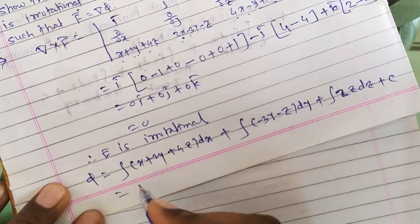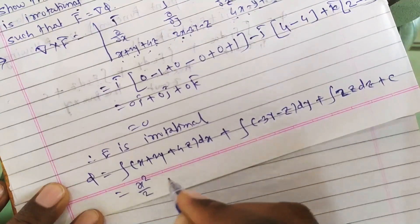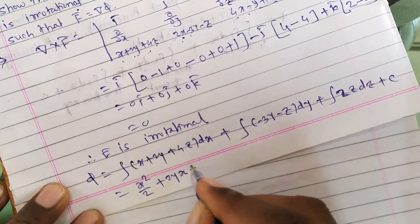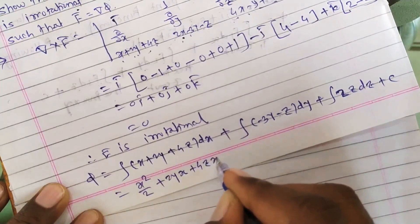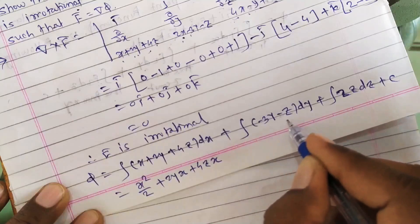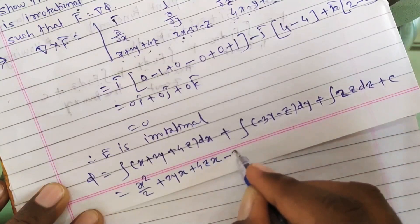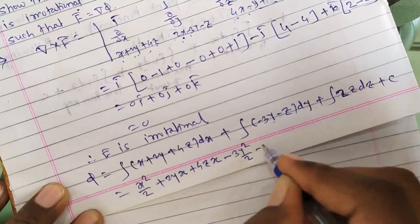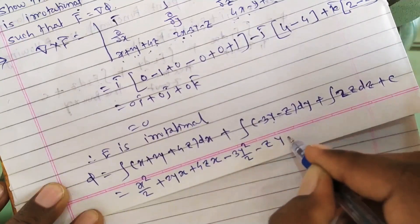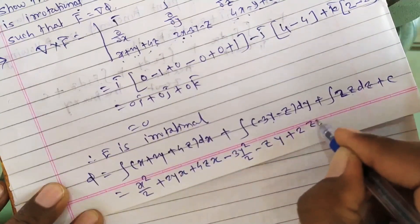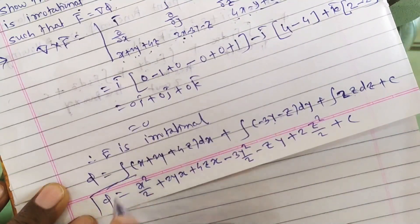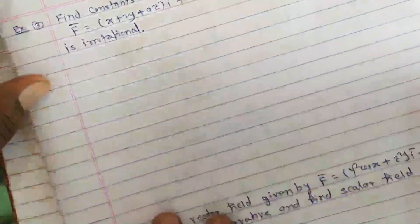So φ = ∫(x + 2y + 4z) dx + ∫(−3y − z) dy + ∫2z dz + C. Integrating: x²/2 + 2yx + 4zx − 3y²/2 − zy + z² + C. This is the scalar potential φ for the second problem.